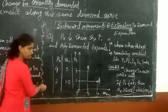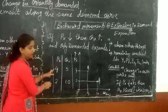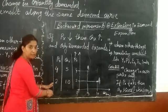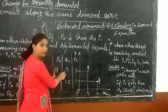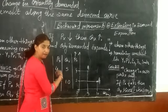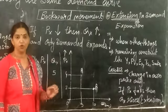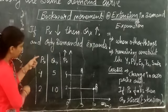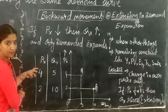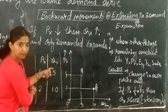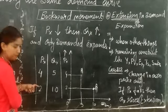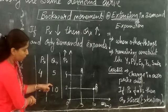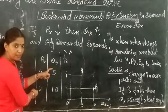Now price falls to 2 rupees per unit. At 4 rupees the quantity demanded is 5 units, and at 2 rupees the quantity demanded rises and becomes 10 units. Backward movement shows the extension. The price of the commodity was earlier 4 rupees per unit, at which the quantity demanded is 5. If the price falls and becomes 2 rupees per unit, the quantity demanded will rise to 10 units.